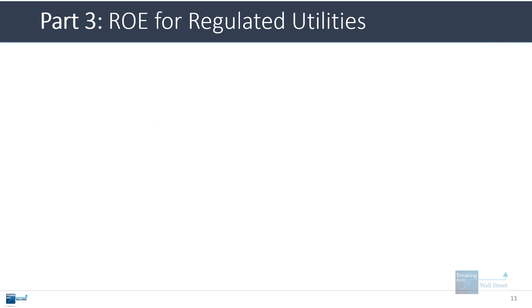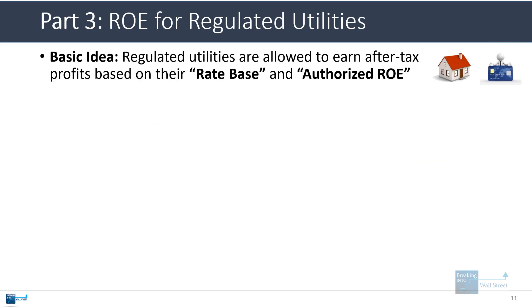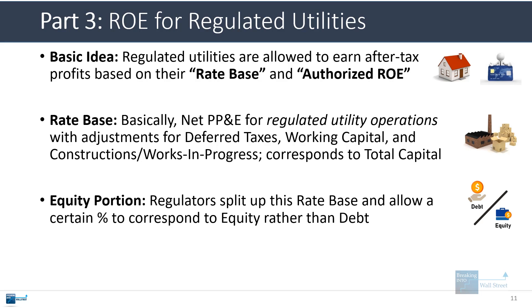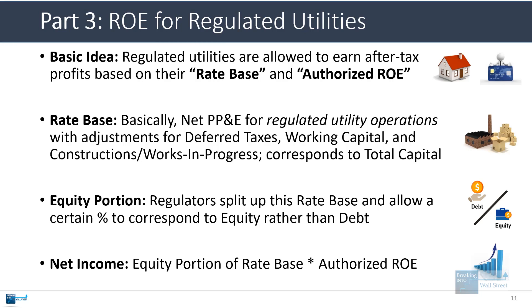Now let's go to the utility example. Regulators set the authorized or allowed return on equity. All utility companies have a rate base representing essentially their assets and the capital to back and support those assets. It is more complicated than just net PP&E — there are adjustments for deferred taxes, working capital, construction in progress, and other items. But the basic idea is that regulators allow a certain percentage of the rate base to correspond to equity rather than debt, and net income equals this equity portion times the authorized ROE.